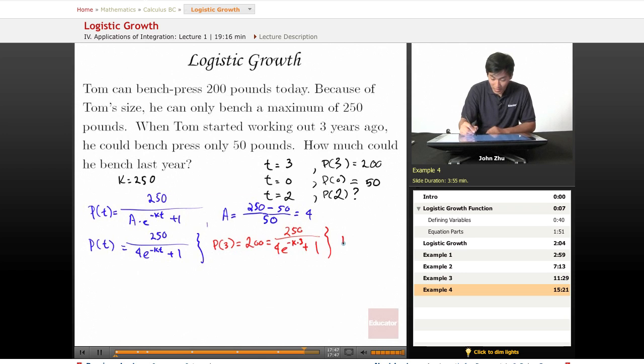And solving for k, k is going to equal about 0.92, so close to 1. So still a pretty fast growth rate. And plugging this back into our growth model to complete it, p of t equals 250 divided by 4 times e to the negative 0.92t plus 1.